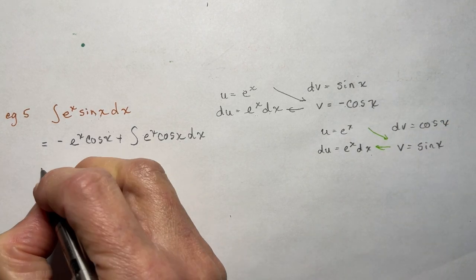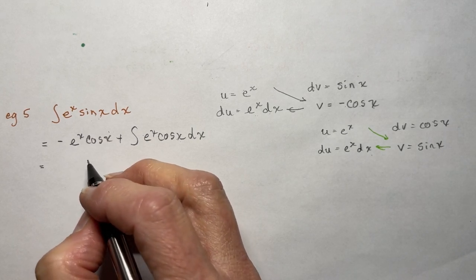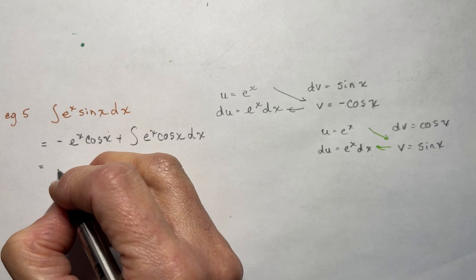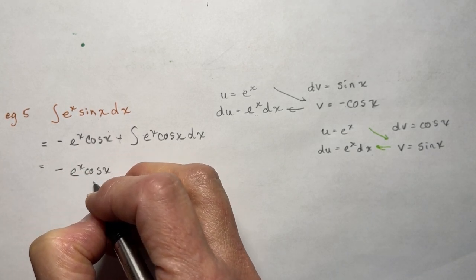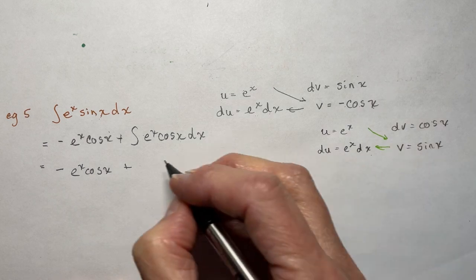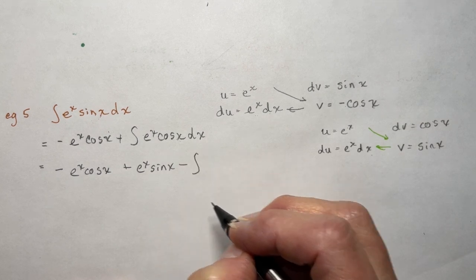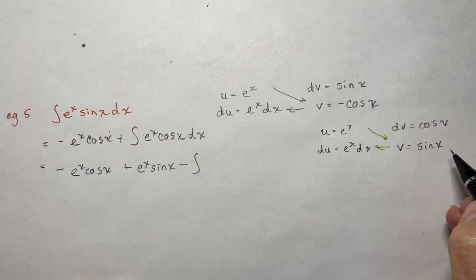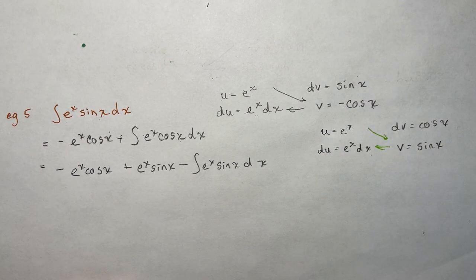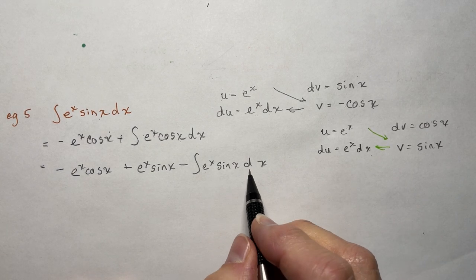So now I've got the two parts. Wait — I got positive when I should have got negative. I should have got negative. So continuing: negative e^x·cos(x) plus e^x·sin(x) — this is u·v — and now I have minus the integral of e^x·sin(x)dx. So we've got a bit of a mess going on here because we have the same integral all over again.